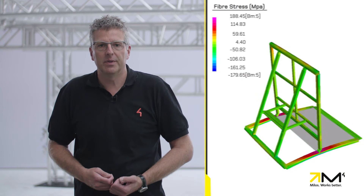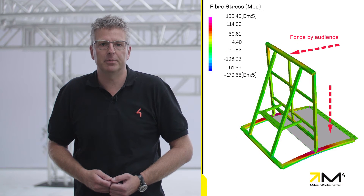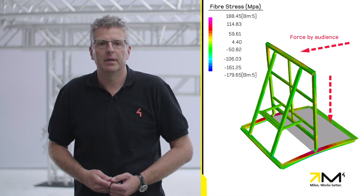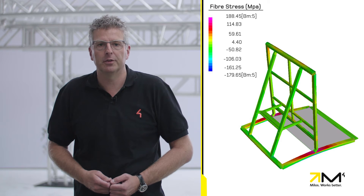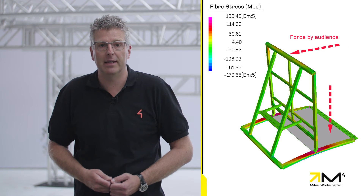The horizontal bottom profile turns out to be the most critical component. With six to eight people standing on the bottom platform, the barriers prevent it from overturning, but the bottom profile wants to bend upwards.